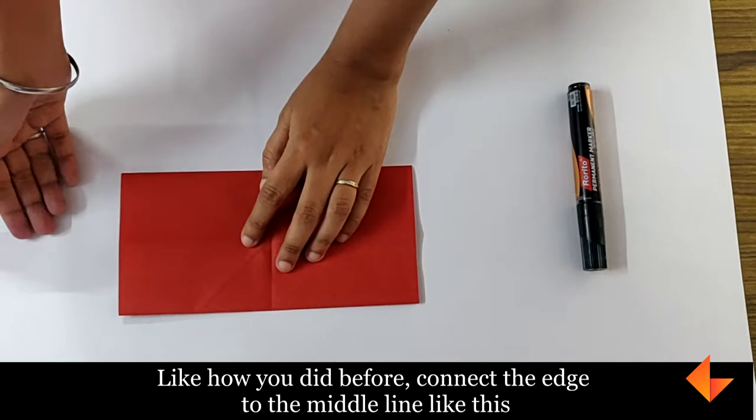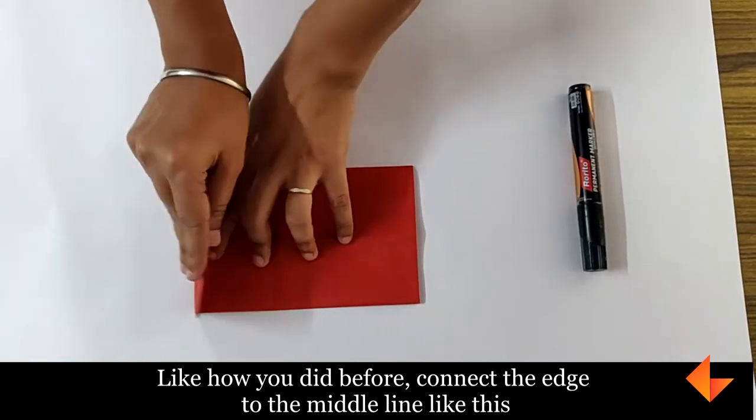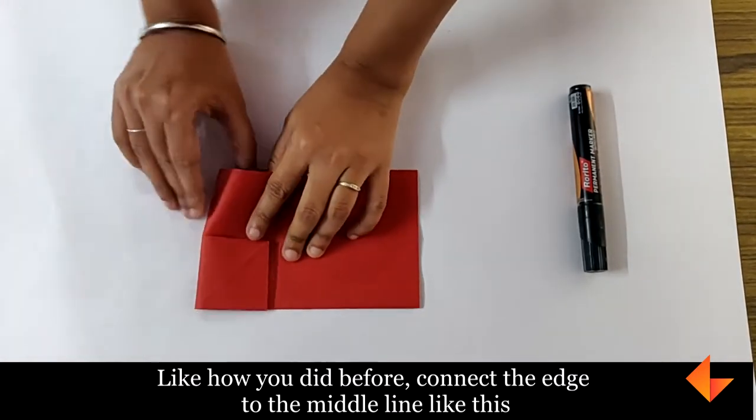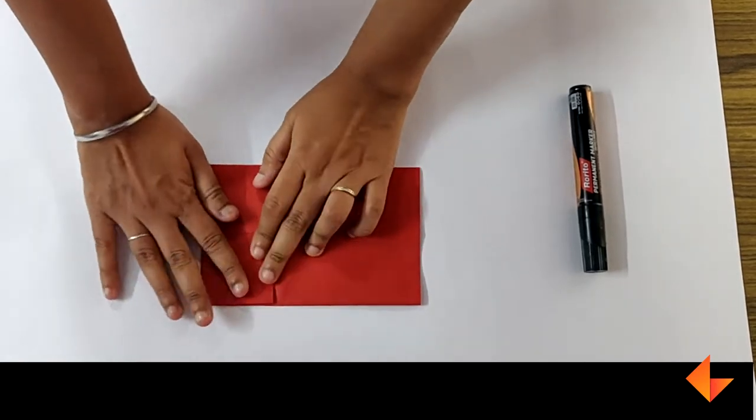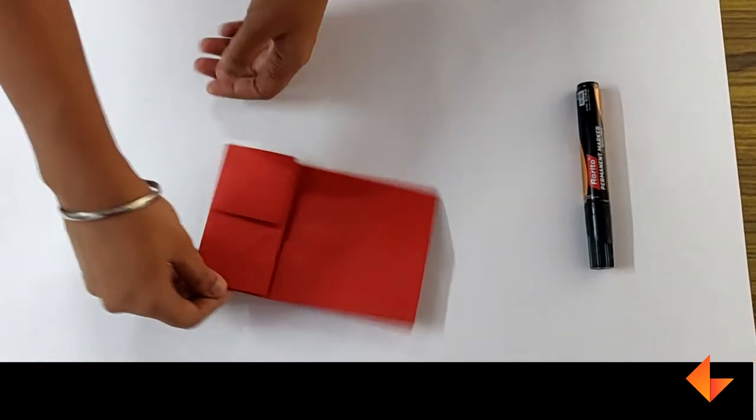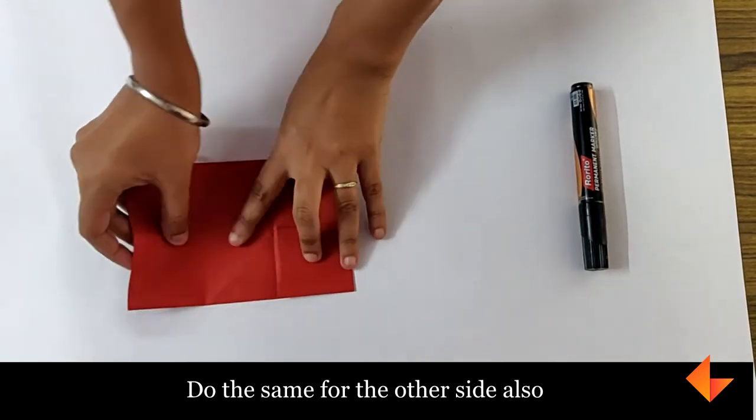Like how you did before, connect the edge to the middle line by folding it like this. Do the same for the other side also.